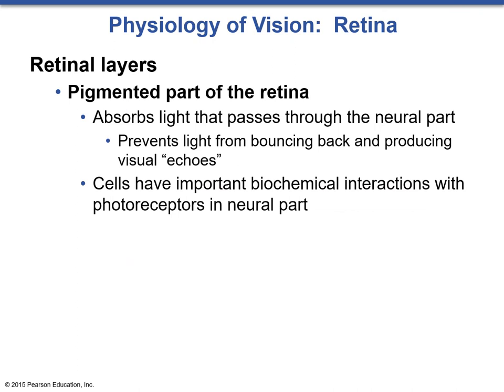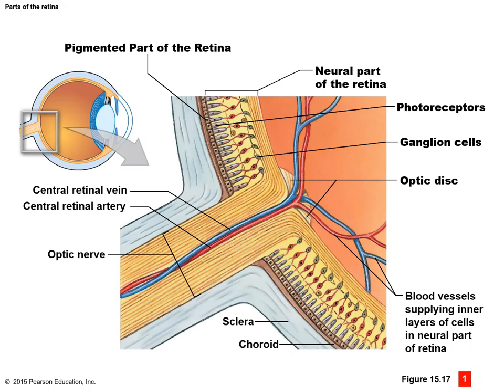Once we focus the light onto the back of the eye, we reach the retina and its pigmented part. The pigmented part of the retina absorbs light that passes through the neural part and prevents light from bouncing back and producing visual echoes — so it is very dark. Light actually travels all the way through to the back of the eye where the pigmented retina is, passes through many cells without interacting, and the pigmented layer grabs that light and transmits it to the photoreceptors. Information then moves through the neural part of the retina to the bipolar cells and then to the ganglion cells, transmitting that information to the optic nerve.